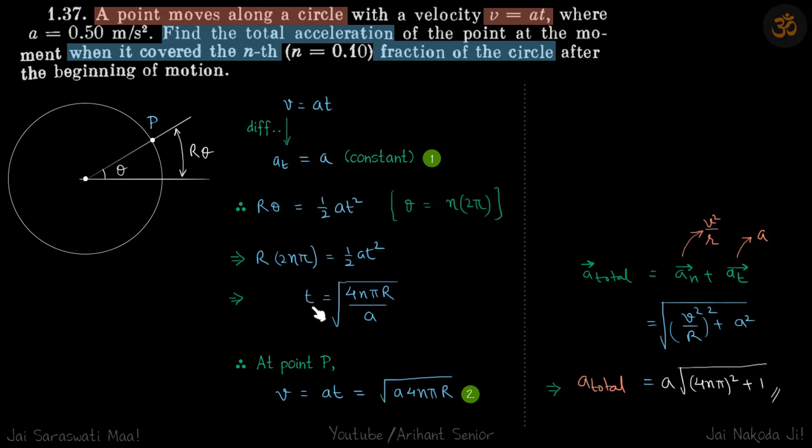Now we can write the velocity at point P: v = at equals this much. So a_total is a_n plus a_t. So root of (v² / r)² plus a², you put the values of v as this and get your answer.